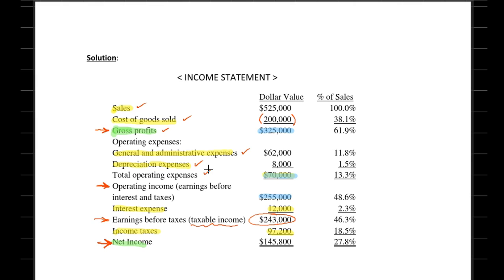Deducting interest expense from operating income, we came across earnings before taxes, and earnings before taxes minus income taxes gives you net income. So this ordering is very important.